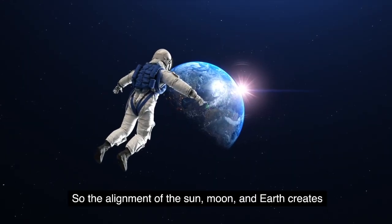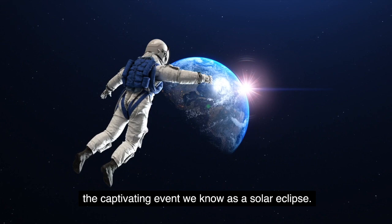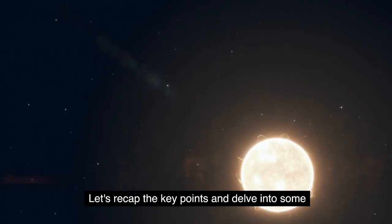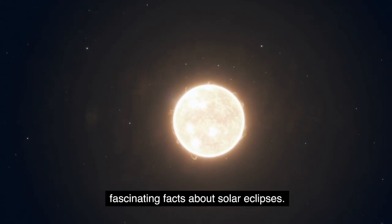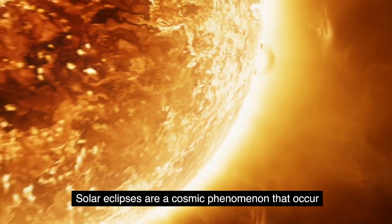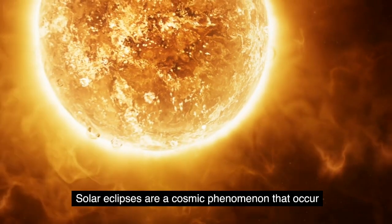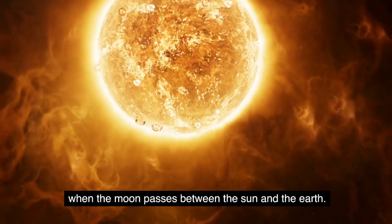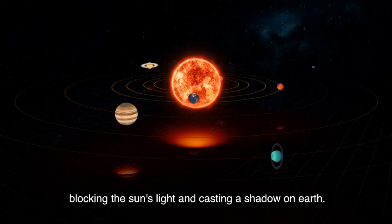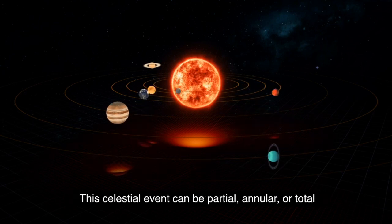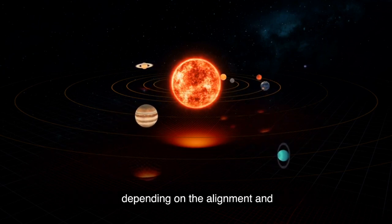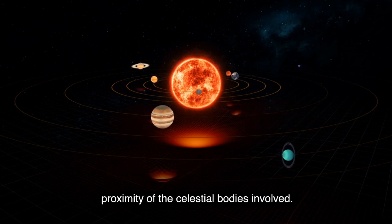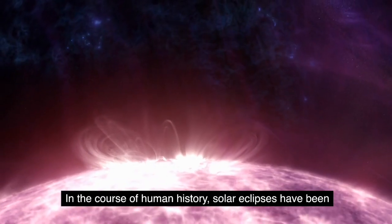Let's recap the key points, and delve into some fascinating facts about solar eclipses. Solar eclipses are a cosmic phenomenon that occur when the moon passes between the sun and the Earth, blocking the sun's light and casting a shadow on Earth. This celestial event can be partial, annular, or total, depending on the alignment and proximity of the celestial bodies involved. In the course of human history, solar eclipses have been perceived differently across cultures. Some viewed them with awe and wonder, while others saw them as ominous portents.